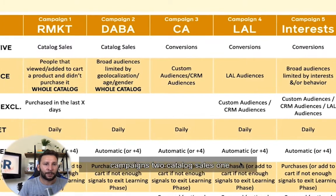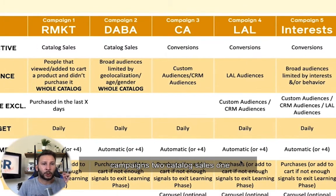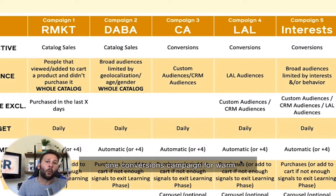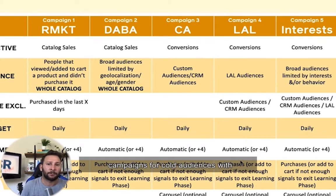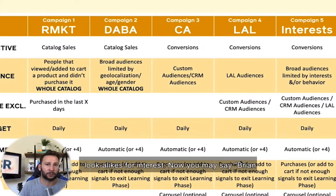So we have five campaigns: two catalog sales — one remarketing, one cold — one conversions campaign for warm audiences, and the other two conversions campaigns for cold audiences with lookalikes or interests.